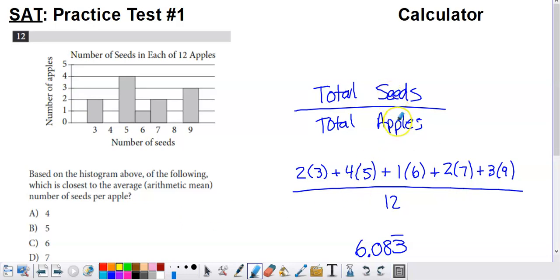Total seeds divided by total apples. Total number of apples is 12, so there's no work necessary to do that. We're told what that number is. The denominator is going to be 12. But the total number of seeds is what we have to have in the numerator.